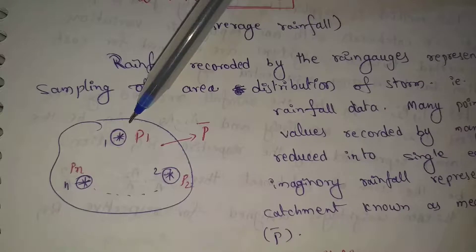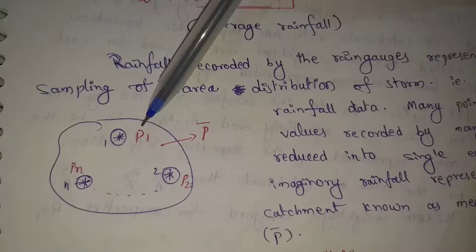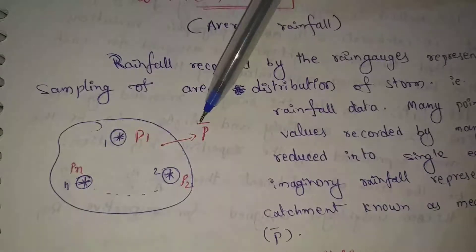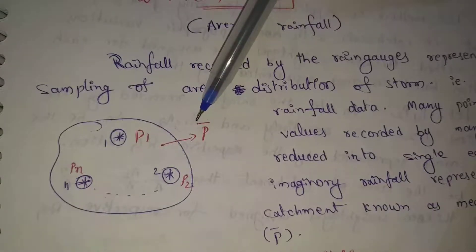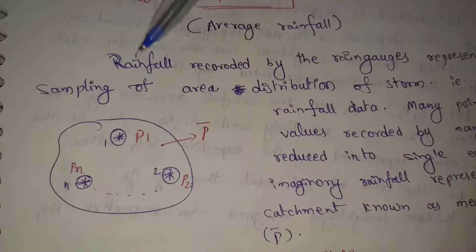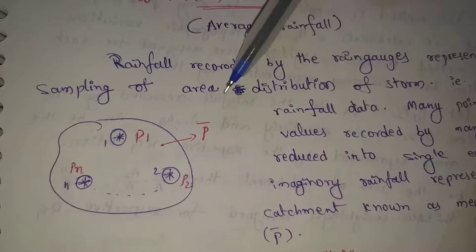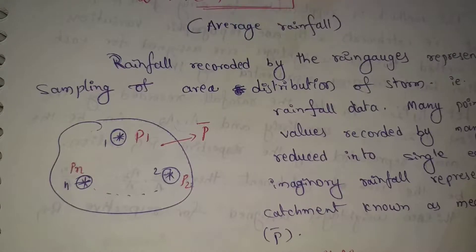These rain gauge stations will measure rainfall. The measurements will be P1, P2, P3, and so on, up to Pn. If we average all these into one value, that average is the mean precipitation value.